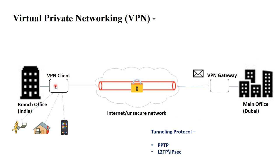The condition for VPN is that you need to have the same company's VPN client and VPN server. For example, if you are using a Cisco VPN client, you need a Cisco VPN server. If you are using a Microsoft VPN client, you need a Microsoft VPN gateway. Both the VPN client and the VPN gateway need to be from the same company.